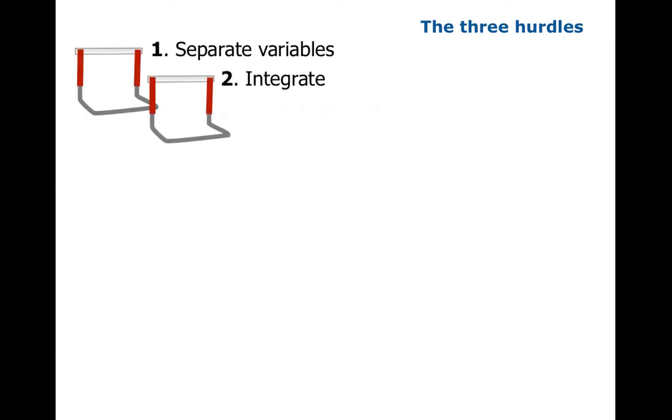So it's probably instructive to go back and think of the three steps as possible hurdles. Because it's not necessarily the case that you can get over each of these hurdles. So let's look at some examples where we actually get tripped up.